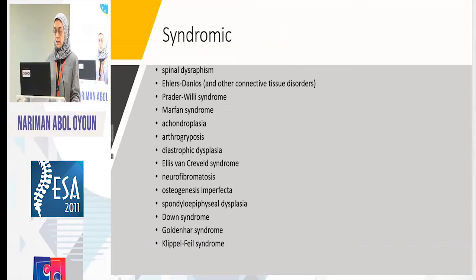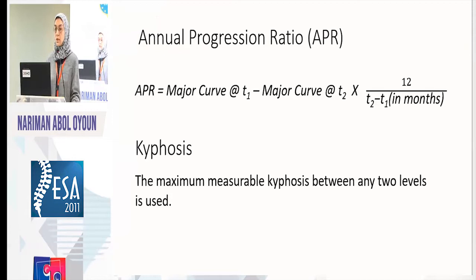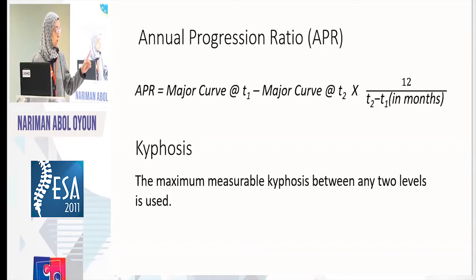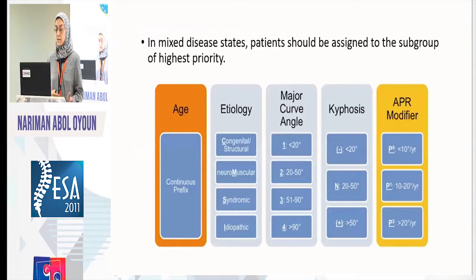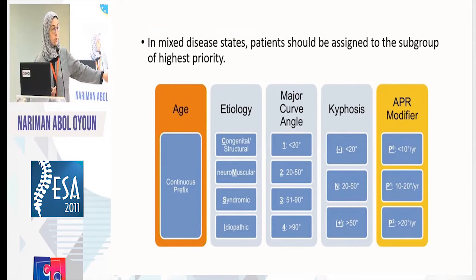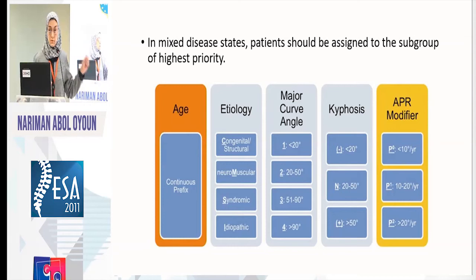The annual progression ratio is calculated from curve progression every year, requiring two time points at least six months apart. You take the curve measurement at time two, minus the curve at time one, then divide by time in years, giving you progression in degrees per year. Kyphosis is the maximum measurable kyphosis between any two levels on the lateral view. In mixed cases — like a CP patient with a hemivertebra — you allot it to the higher-level category, placing it in the congenital group.